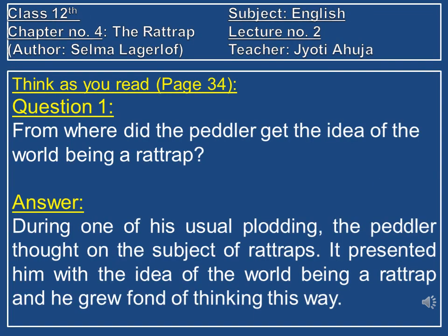I assigned you homework given on page number 34 in my lecture number 1. The first question is: from where did the peddler get the idea of the world being a rat trap? The answer is: during one of his usual plodding, the peddler thought on the subject of rat traps. It presented him with the idea of the world being a rat trap, and he grew fond of thinking this way.